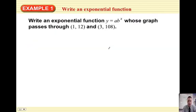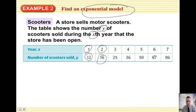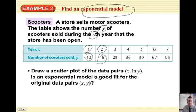Now, the next one is find an exponential model. Find the function that goes with basically this information right here. So a store sells motor scooters. It shows the number y of scooters they had during the x year that store had been open. So the first year they sold this many scooters, second year this many, and so on. The question says draw a scatter plot of the data pairs x comma natural log of y. Now they do this because what they wanted to show you in the book, they wanted to show you that whenever you have an exponential model,